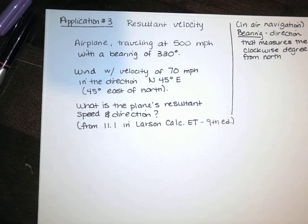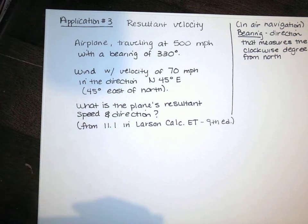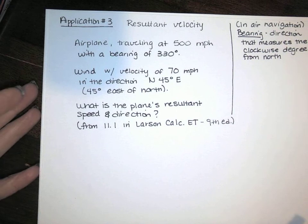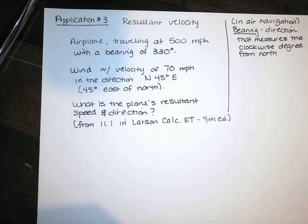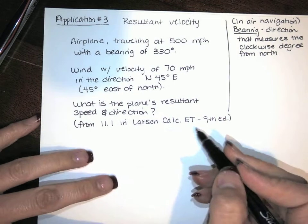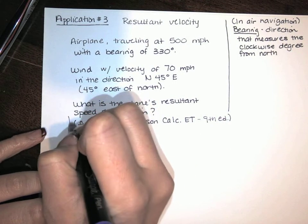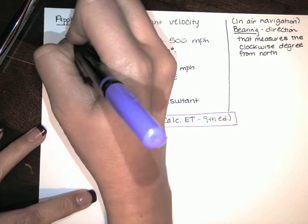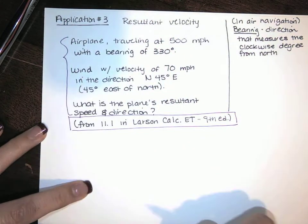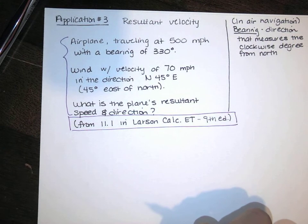Hi guys! This video is about another application of vector operations and a word problem dealing with resultant velocity. This is taken from the Larson Calculus with Early Transcendentals book, the 9th edition, and it was originally in section 11.1. That's our citation, and this is a summary of the information in the question.